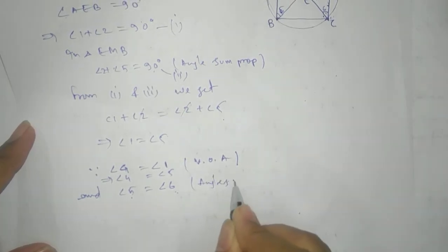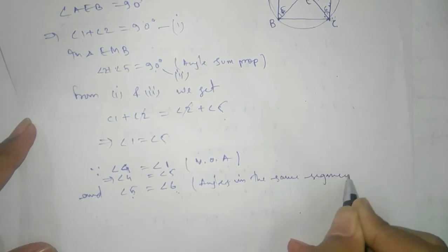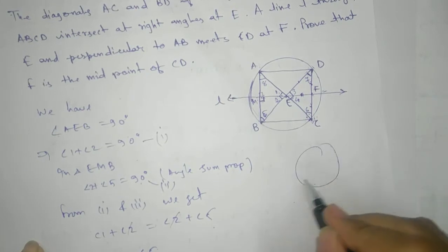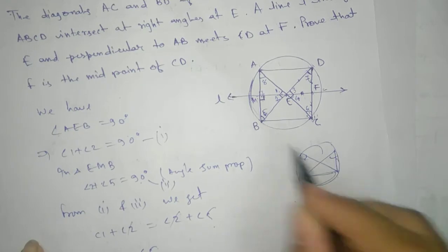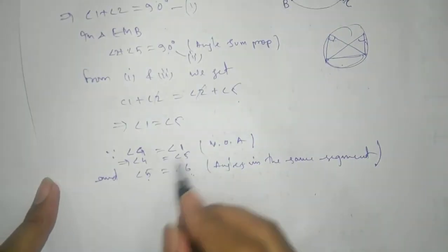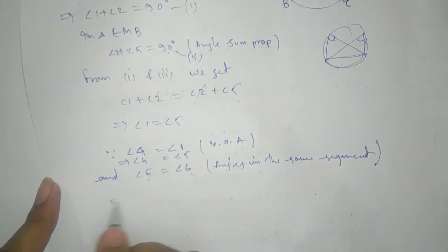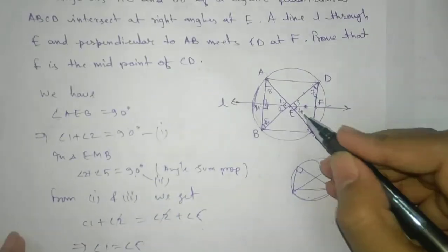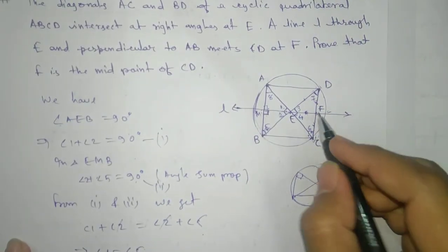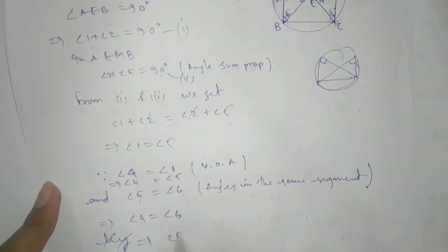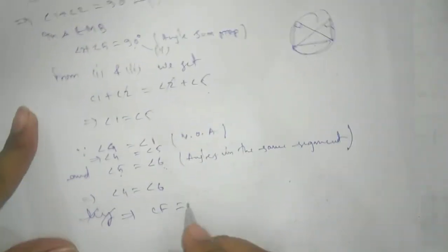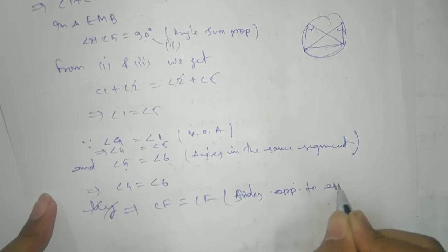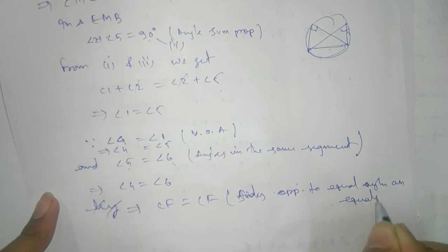Angles in the same segment — if we take this arc as our segment, angle 5 and angle 6 are angles subtended by the same segment, so they are equal. From angle 4 equals angle 5, and angle 5 equals angle 6, this implies angle 4 equals angle 6. Therefore, CF, which is opposite to angle 4, equals EF, which is opposite to angle 6, since sides opposite to equal angles are equal.